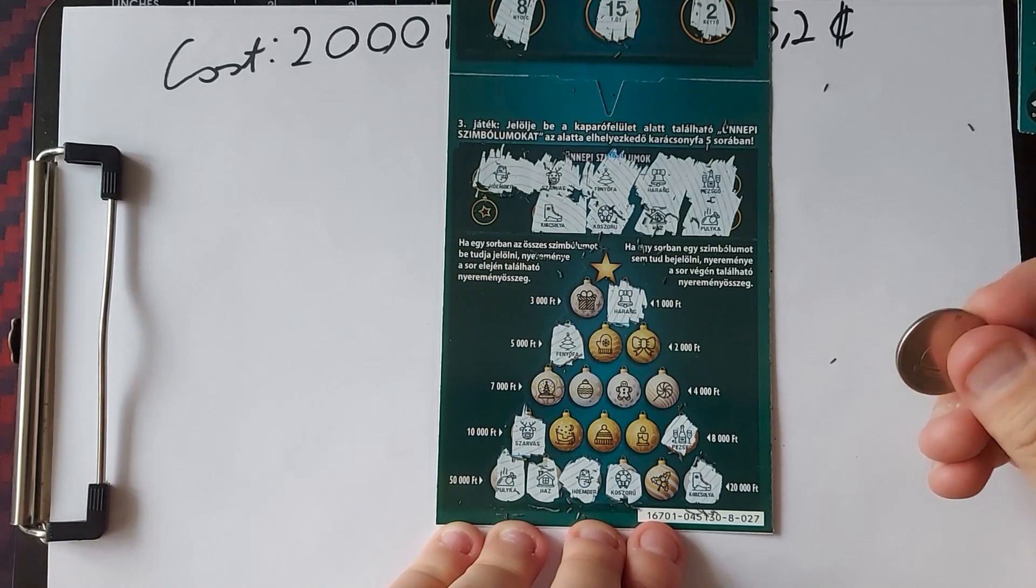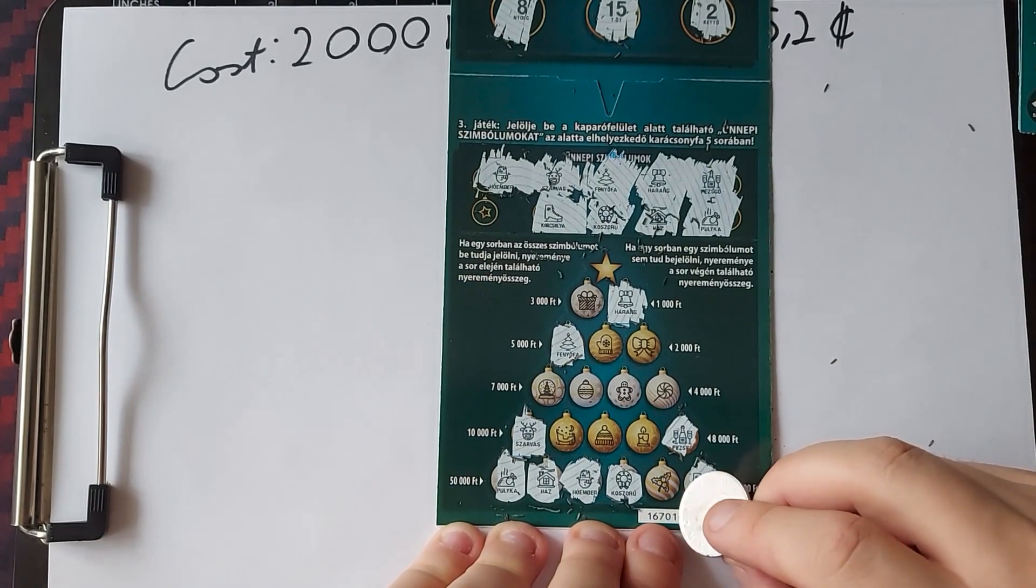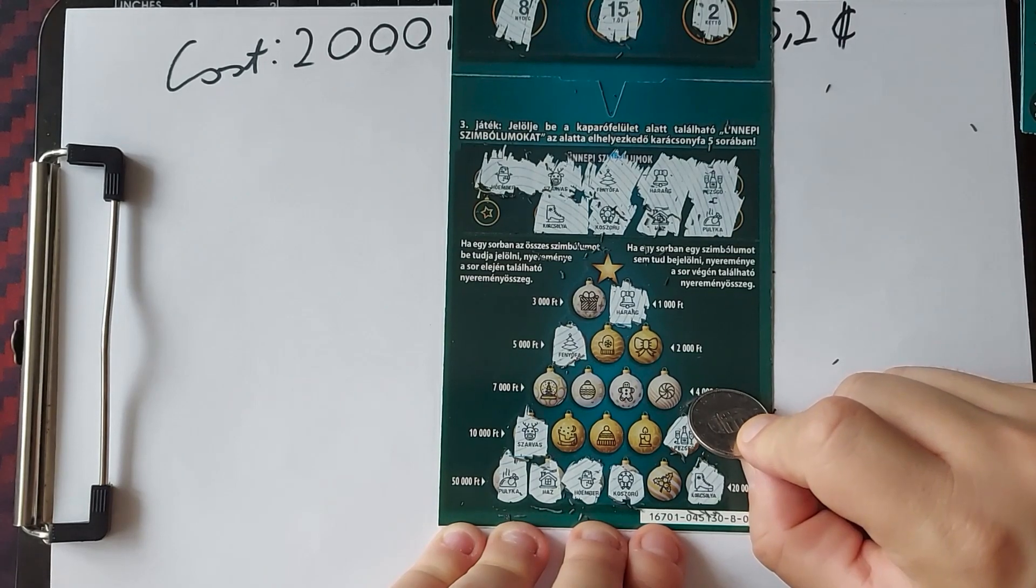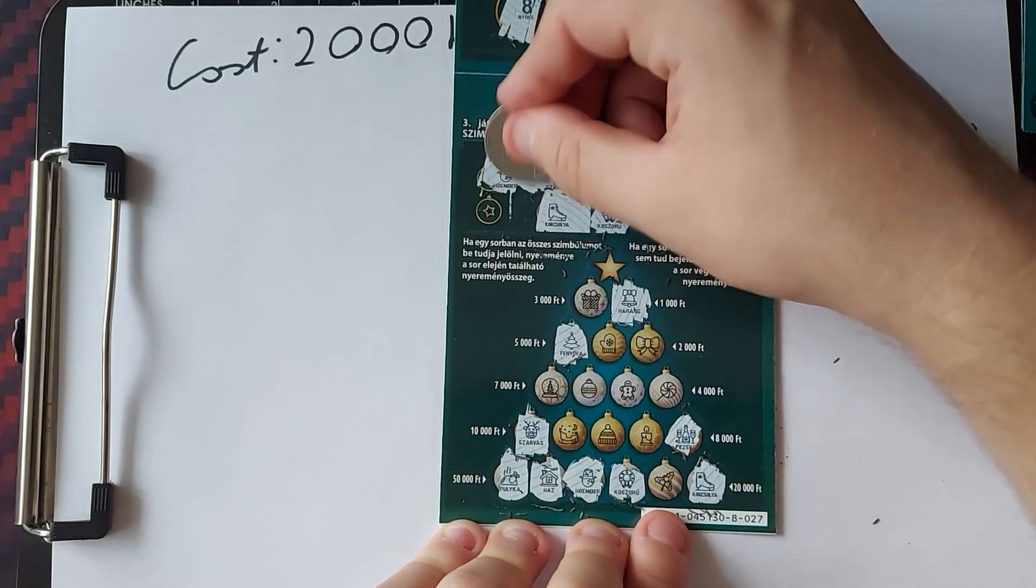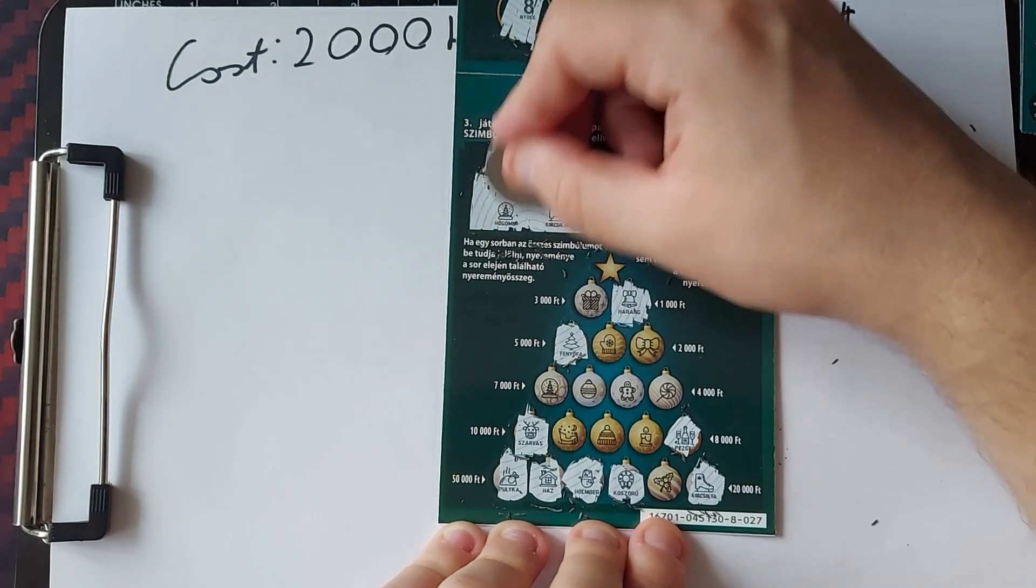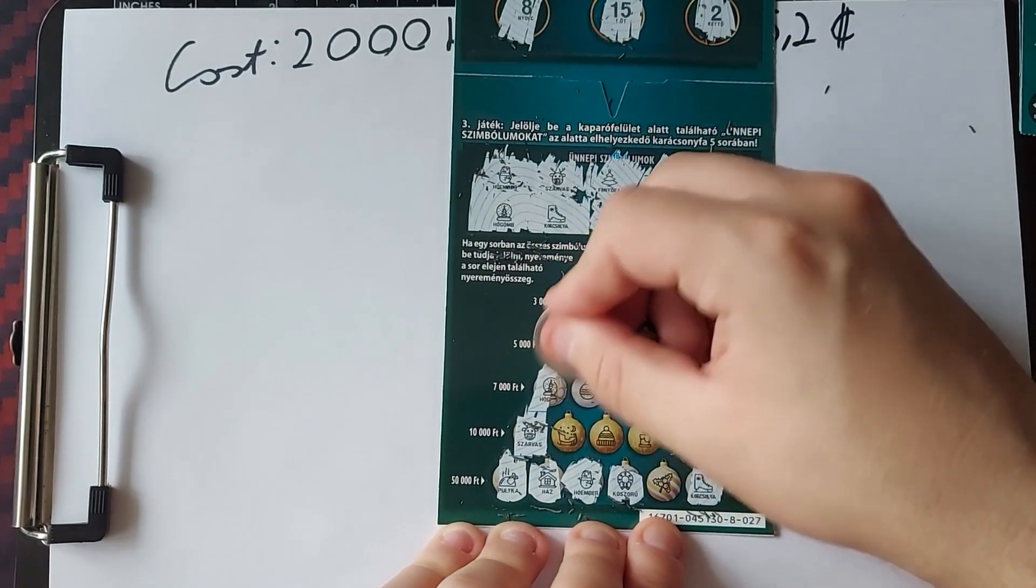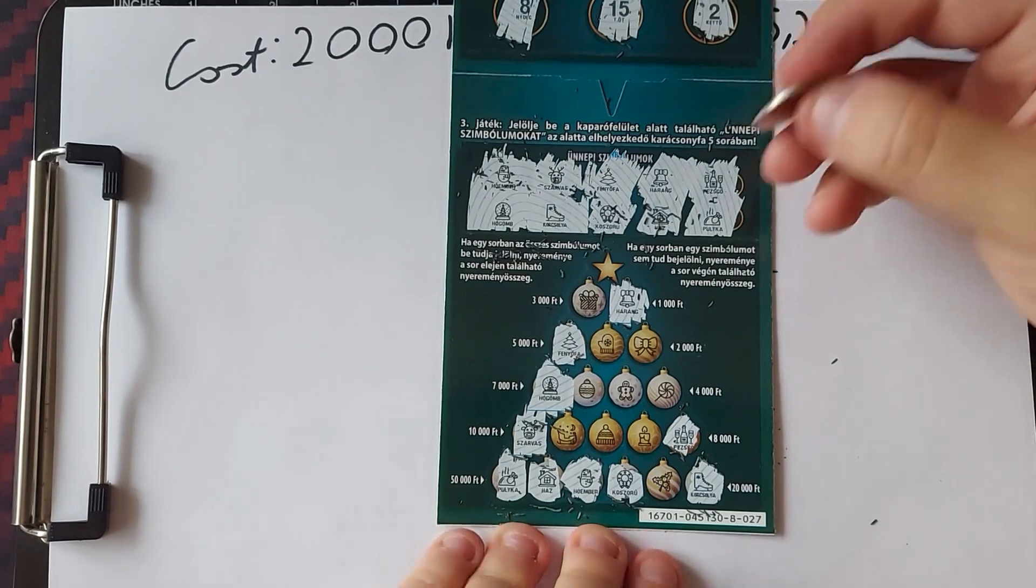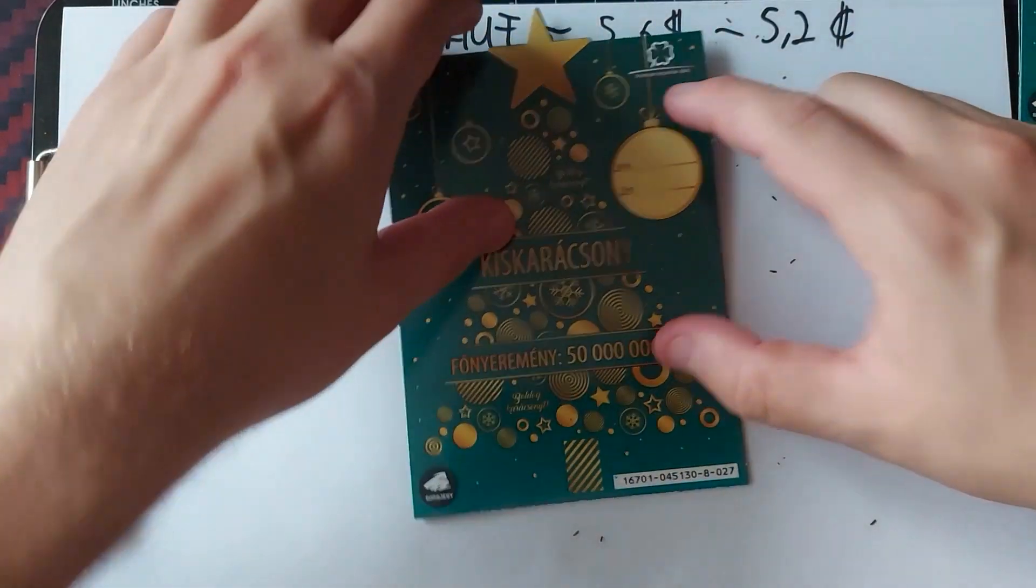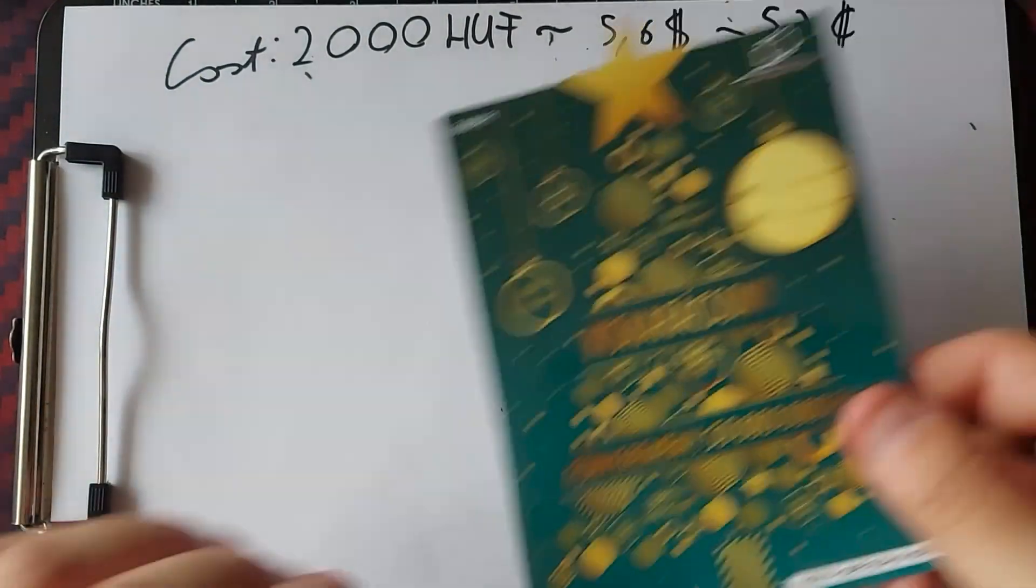One is the gift or nothing in the row, or the ornament, or the ornament, and of course, we got the snow globe, so no win on these scratching tickets.